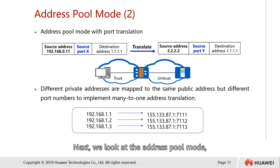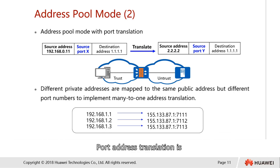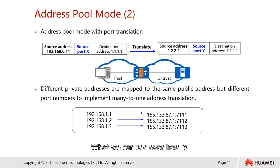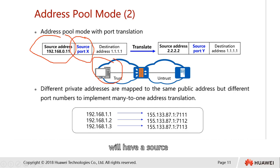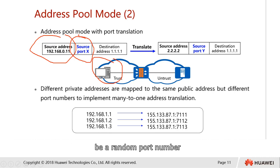Next, we see address pool mode but this time with port translation. Port address translation is applied in this case. We have a trust user at 192.168.0.11. This particular user will have a source port number, which could be a random port number.